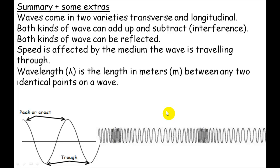Wavelength, which is given the symbol lambda, is the length in meters between any two identical points on the wave. So, for instance, on this transverse wave, that could be from here to here. We could call this distance lambda, or you could choose from here to here, or you could choose from here to here.